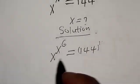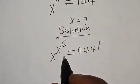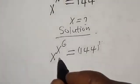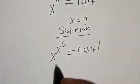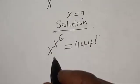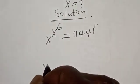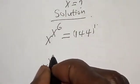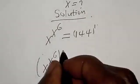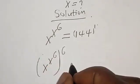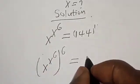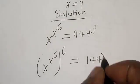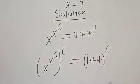Let's multiply the exponents of both sides by the power of 6. Then s raised to the power of s raised to the power of 6, raised to the power of 6, is equal to 144 raised to the power of 6.